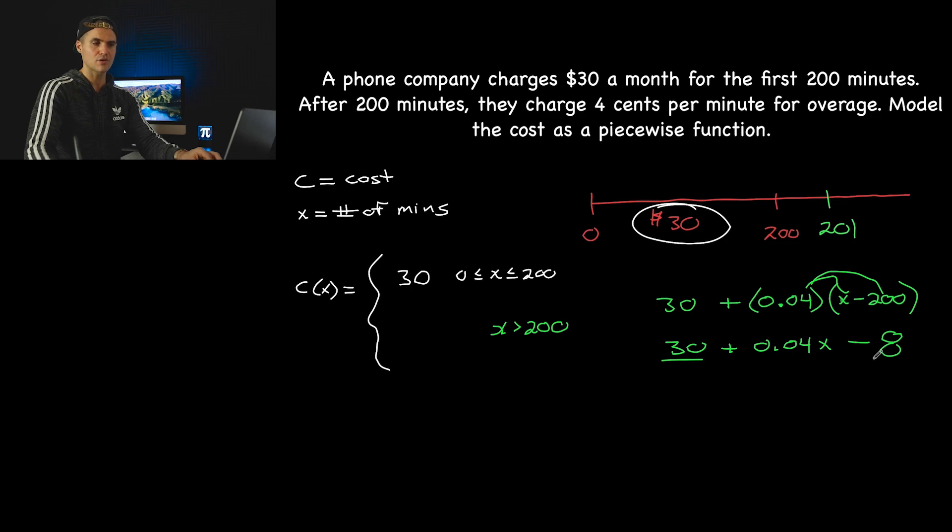So we would have 0.04X minus 0.04 times negative 200 would give us 8 like that. And then notice that the 30 and the minus 8, those are like terms. So we'd end up with 0.04X plus 22 like that. And that would be the simplified equation that we input over here. 0.04X plus 22 like that.